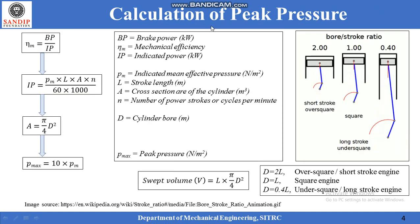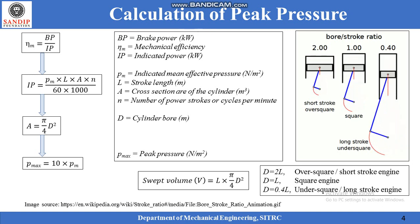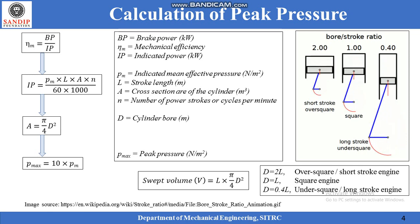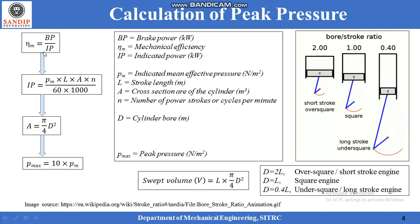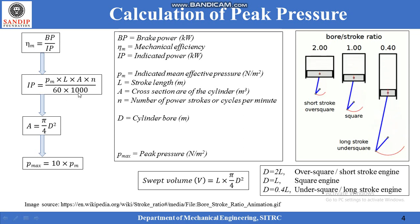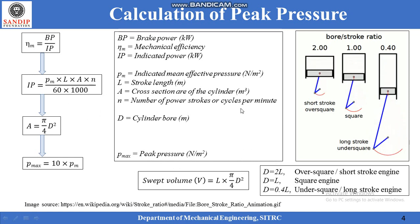The most important calculation is the calculation of maximum gas pressure or peak pressure, since all components of an IC engine are designed against it. At the start of the design, brake power and the corresponding speed of the engine are known to the designer. The displacement or swept volume of the engine is also known. With the known value of mechanical efficiency — or by assuming it to be approximately 80% — and the known value of brake power, indicated power is calculated. It is given by the formula: IP = PM × L × A × N / (60 × 1000). It should be noted that N is not the speed of the engine but cycles per minute.